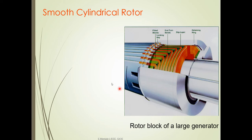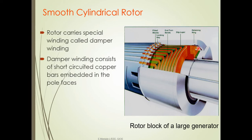This is a large generator rotor picture. The parts include: fitting blocks, locking key, end turn bends, slip layer, and retaining rings. The rotor carries a special winding called a damper winding. We observed the damper winding in the salient pole rotor as well, and we will discuss what the damper winding is and its use.